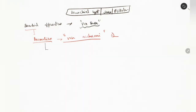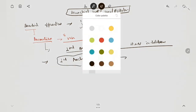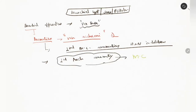Moving on to the anomalies, branchial anomalies are the second most common anomalies in the head and neck in children. Of these, the second arch anomaly is the most common.